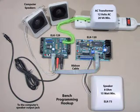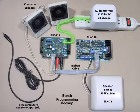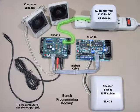Connect a 12-volt 20VA minimum AC step-down transformer to the AC terminals on the ELK 129, located under the cover. Then plug the transformer into an AC receptacle.